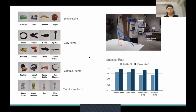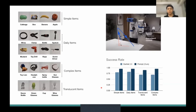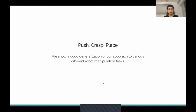Here are the experimental results. We test our approach on daily items with four categories: simple items, daily items, complex items, and translucent items. The results show that on all categories we perform well in the real world and outperform the baseline. We also demonstrate good generalization to various manipulation tasks: push, grasp, and place.